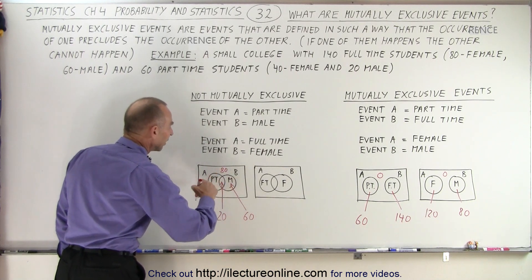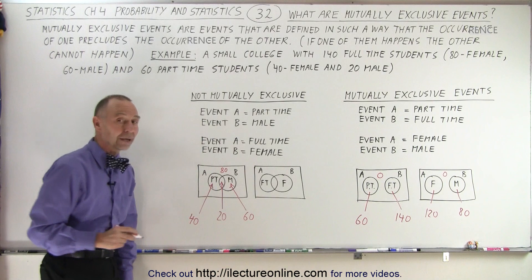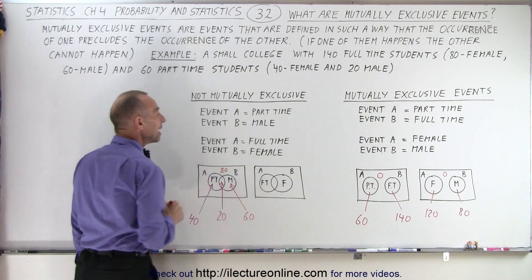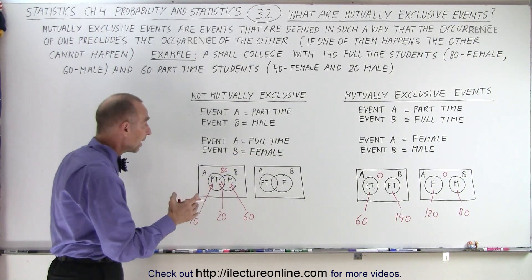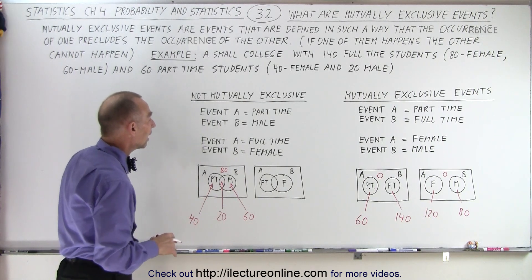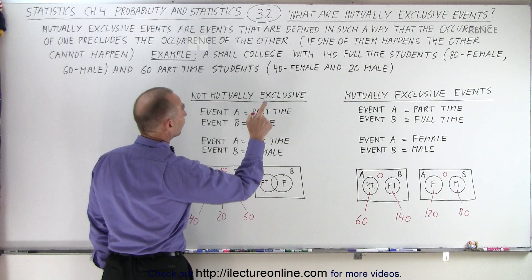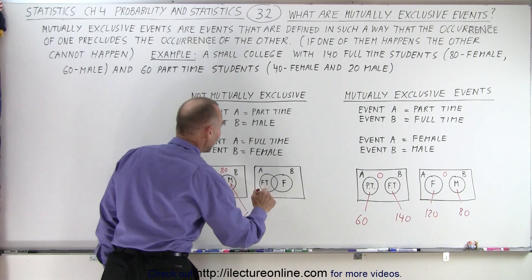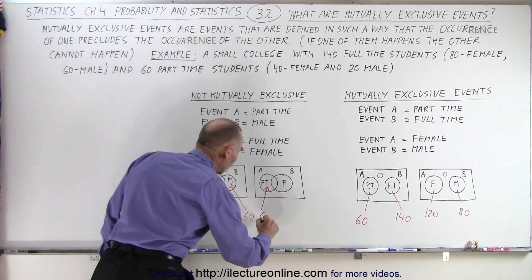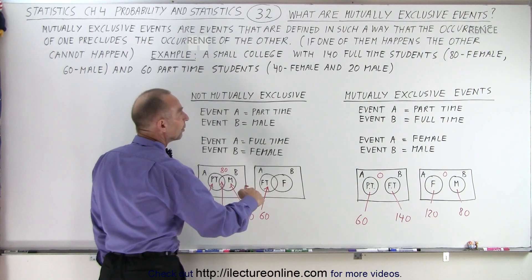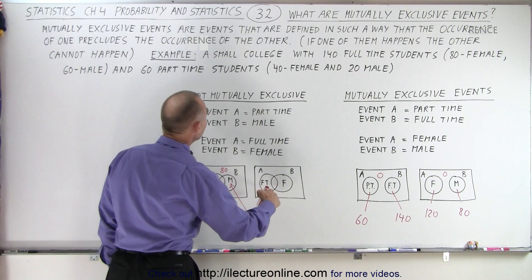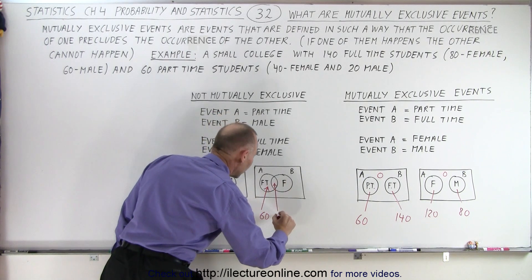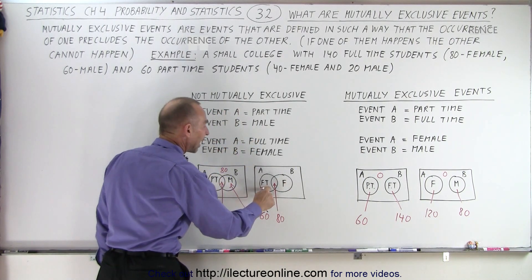That means there are 80 students that do not fall in either one of the two categories. Now we have event A being full-time and event B being female. In this college, it is possible to be full-time and female at the same time. There's a total of 140 full-time students, but only 80 of them are female, which means 60 of them are male. So in this part of the circle we have 60 males that are full-time, and the other 80 full-time students are female. This overlap represents 80 students that are both full-time and female.